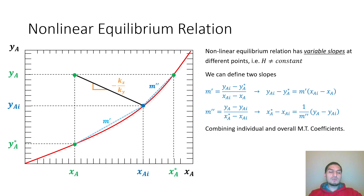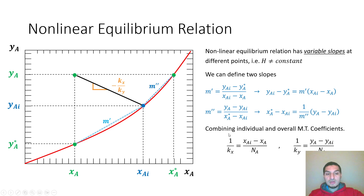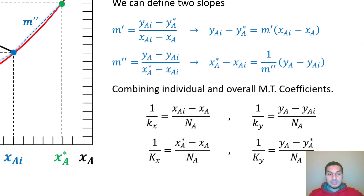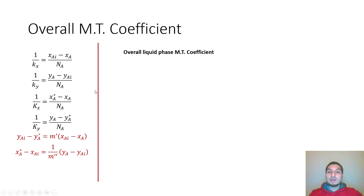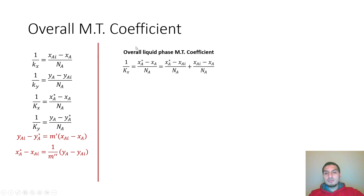When we combine the individual and overall mass transfer coefficients as before, we can rewrite the equation so that 1 over the coefficient equals the driving force divided by the flux. This applies to both the individual and overall mass transfer coefficients. These four flux relations and two slopes are the information we will use to get the relation between the overall and individual mass transfer coefficients.